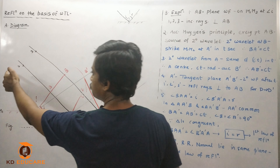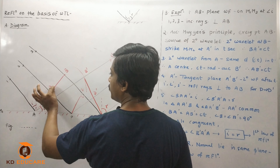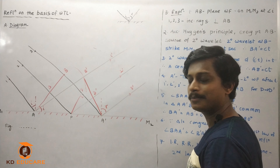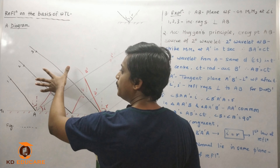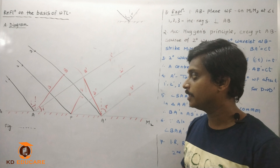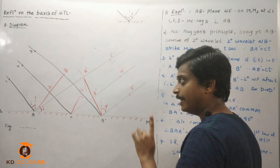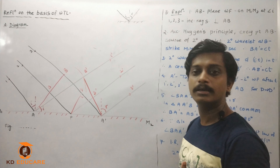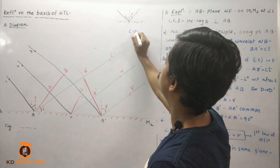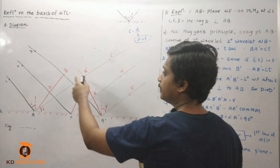The first part goes to point A. AB is your wavefront — point A has touched the reflecting surface and point B has not yet reached M1M2. Now, from point B to point A, it will take some time. We use speed = distance / time.